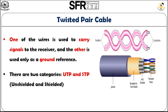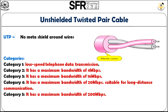In the twisted pair cable there are two types: UTP and STP. UTP means Unshielded Twisted Pair cable and STP means Shielded Twisted Pair cable. The difference is that in UTP there is no metal shield around the wires — as clearly shown in the diagram, the wires are covered only using a plastic cable with no metal shield. In UTP there are five categories: Category 1, 2, 3, 4, and 5, each differing in their data speed.